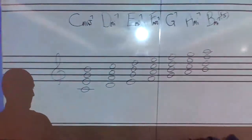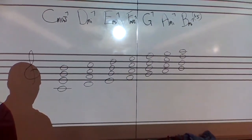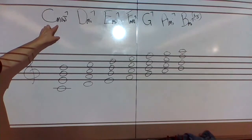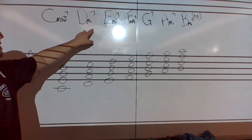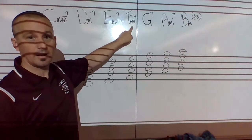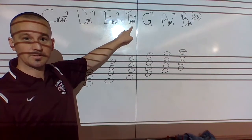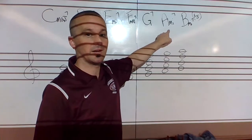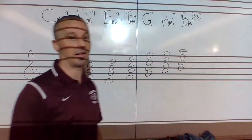You should have a sheet that looks like this. These are the diatonic seventh chords in the key of C major. This says C major 7, D minor 7, E minor 7, F major 7. It's a little tough to see with the glare I have. G7, A minor 7, and B minor 7 flat 5.